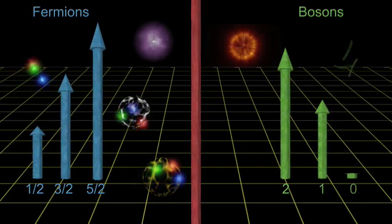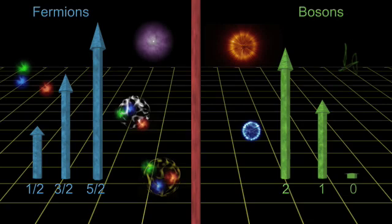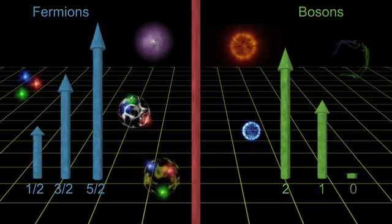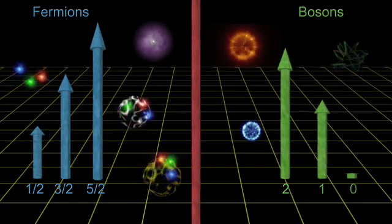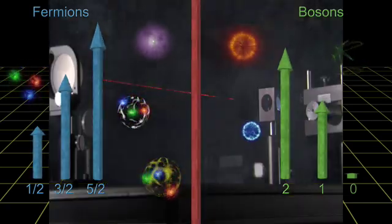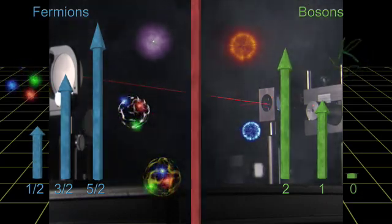Photons, gluons, gravitons all fall into this family. If bosons had to obey the exclusion principle, many modern marvels could not exist, like lasers, which require that huge numbers of photons be in the same state at the same time. And again, the universe would be a very different place.